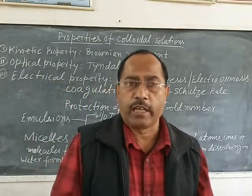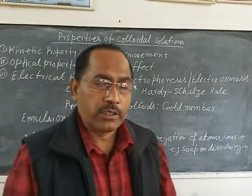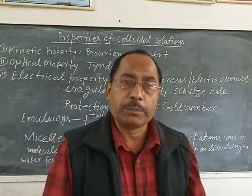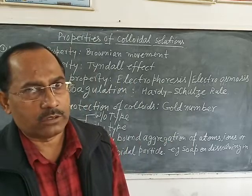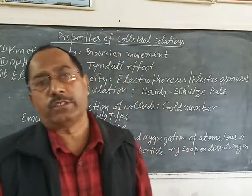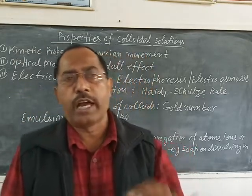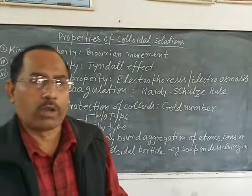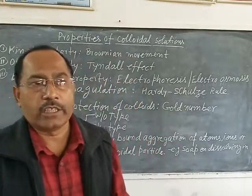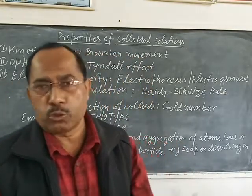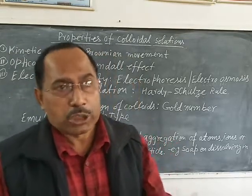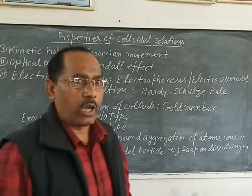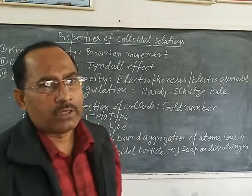As the positive charge of the cation increases, its coagulating power for a negatively charged sol increases, since cations can coagulate negatively charged sol. For the precipitation of arsenic sulfide sol, among NaCl, MgCl₂, and AlCl₃, AlCl₃ is the most efficient coagulant because Al³⁺ has three positive charges, Mg²⁺ has two, and Na⁺ has one. This is the first rule of Hardy-Schulze rule.